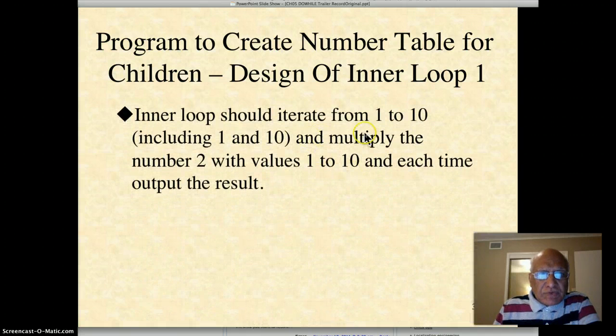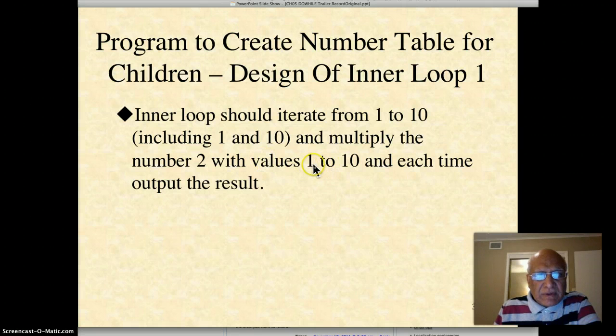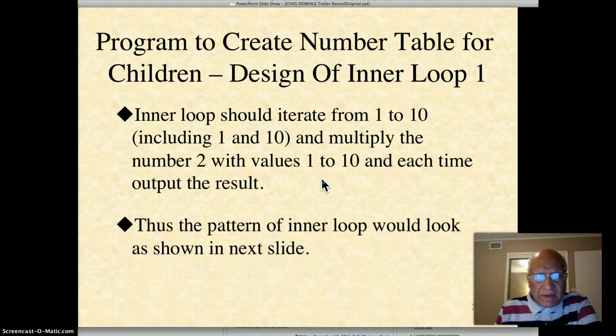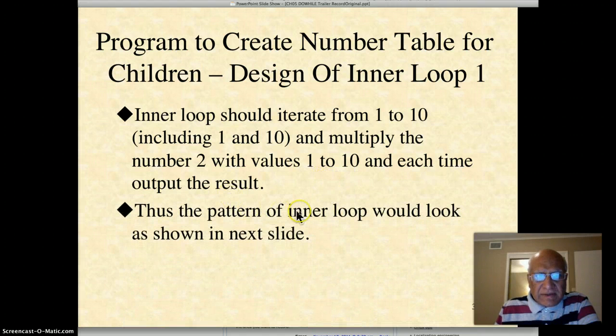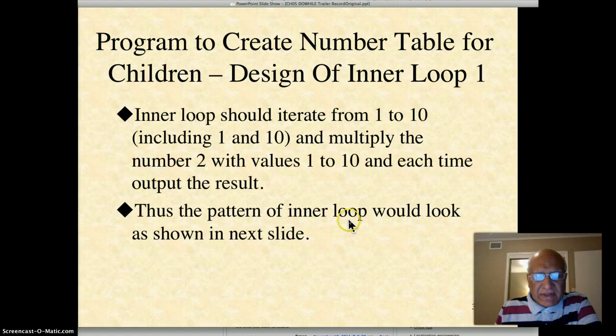So the inner loop should iterate in this case from 1 to 10, including numbers 1 and 10, and multiply the number 2 with values 1 to 10 each time and output the result. Therefore, the pattern of the inner loop would look like as we show it in the next slide.